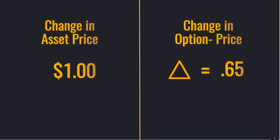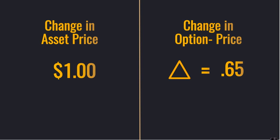So if we were to see a change in the underlying asset price of $1 and the option in question had a Delta of positive 0.65, we would see that option premium change 65 cents on the dollar. So the ratio would be 65 cents on the dollar — the stock moves $1, the option premium changes 65 cents.